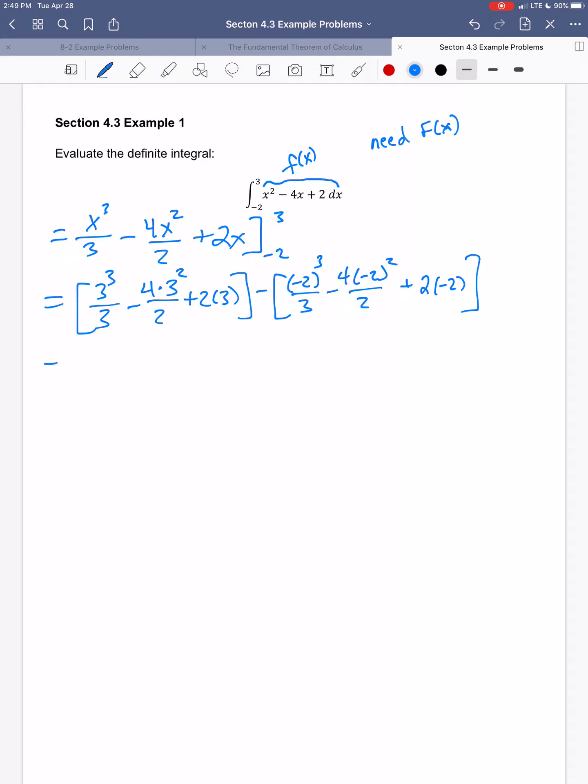And now it's just a matter of simplifying. So I get 27 over 3, 4 times 9, 36 over 2, plus 6. I get negative 8 over 3, minus, negative 2 squared is positive 4, so I get 16 over 2, 2 times negative 2 is minus 4.